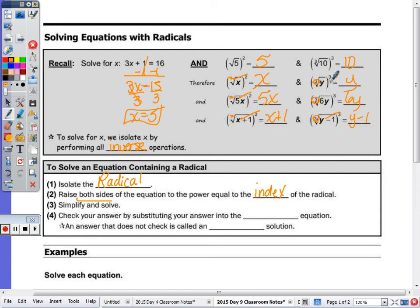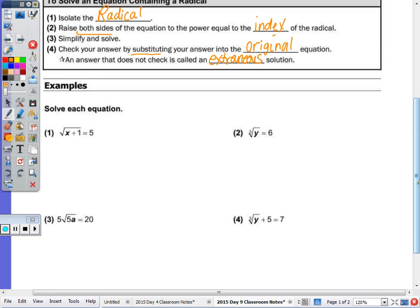So even if it doesn't say to check, you should be plugging it into your calculator to make sure it works, so that you know you have the right answer. But you always substitute in the original equation, not an equation you got as a result of performing an inverse operation, and an answer that does not check is called an extraneous solution. We were looking for extraneous solutions with fractions because the denominator of a fraction can never be 0 or else it's undefined.